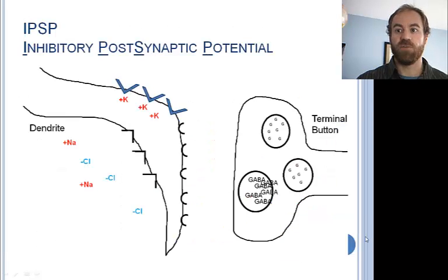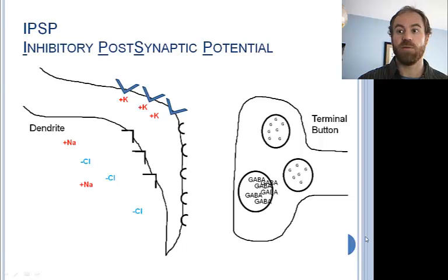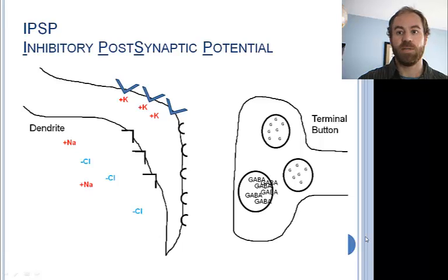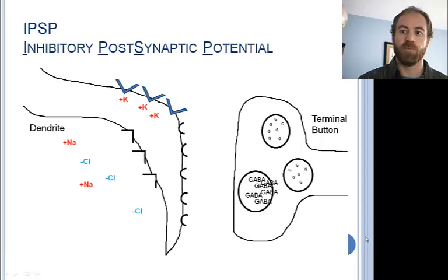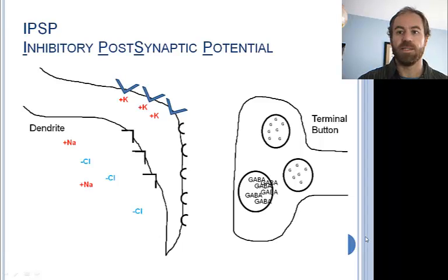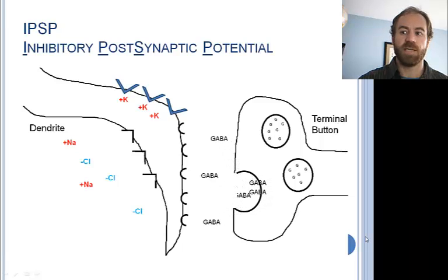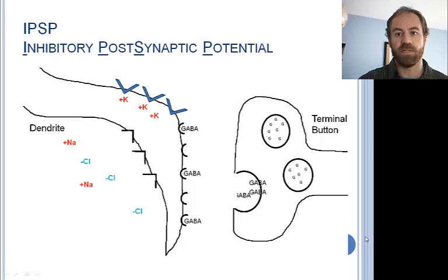Not all synapses involve the excitatory neurotransmitter glutamate. By some estimates, up to 80% of the synapses in the brain do not involve excitation at all, but serve instead to inhibit neurons. The most common inhibitory neurotransmitter is gamma-aminobutyric acid, or GABA for short. GABA is released by axonal endings in the same way that glutamate is, and the GABA also traverses the synaptic gap and binds to receptors on the dendrites.